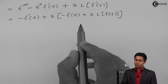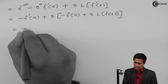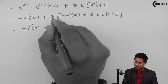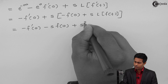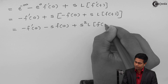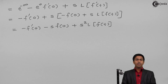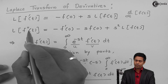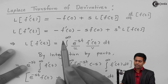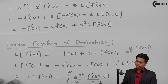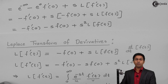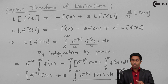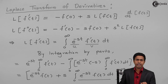Multiplying through by s gives us minus f'(0) minus s·f(0) plus s²·L{f(t)}. We have thus proved the second result: L{f''(t)} = −f'(0) − s·f(0) + s²·L{f(t)}, thereby proving the property of the Laplace transform of derivatives.